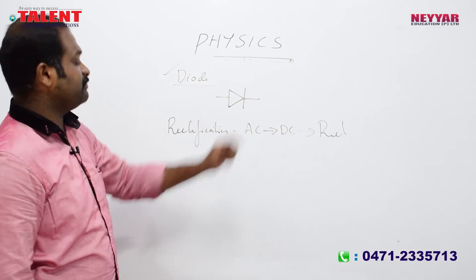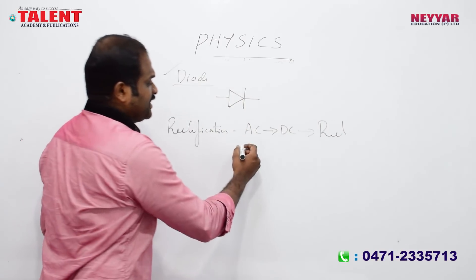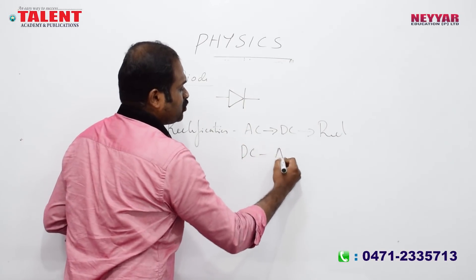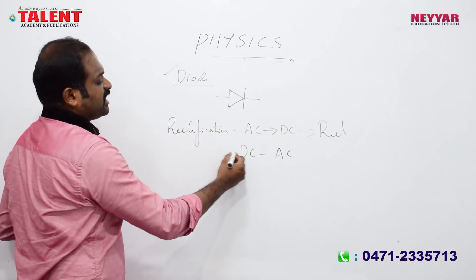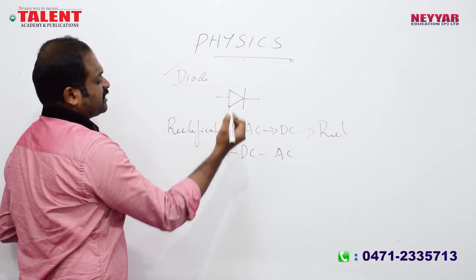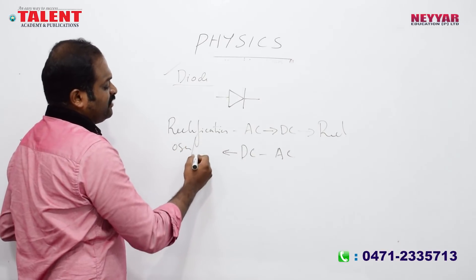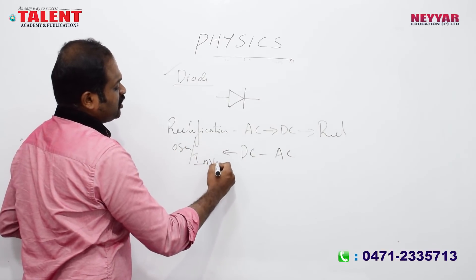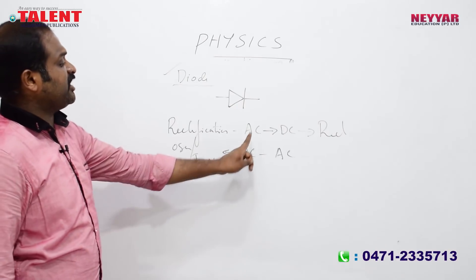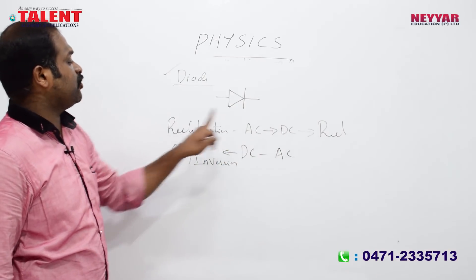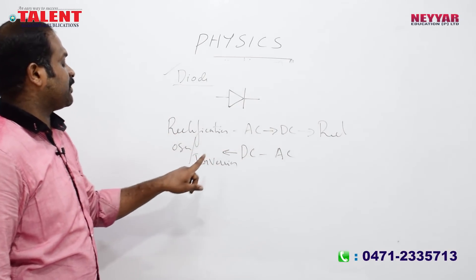The diode has a symbol. The opposite process is converting DC to AC, which involves oscillation and inversion. Rectification converts AC to DC; inversion converts DC to AC.